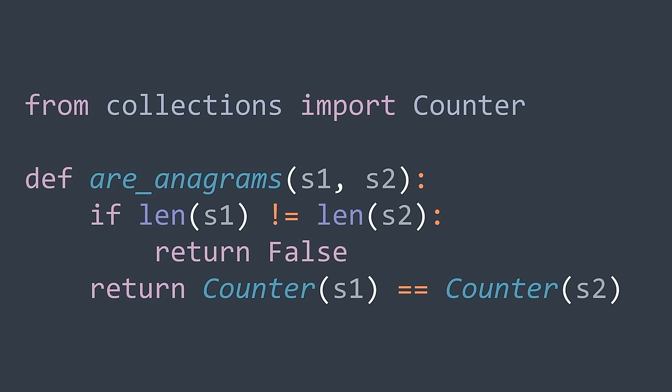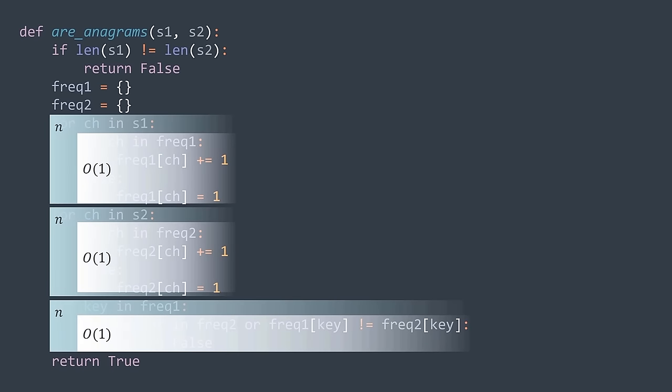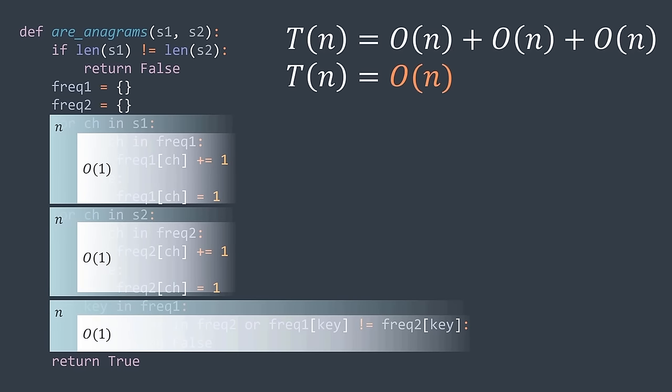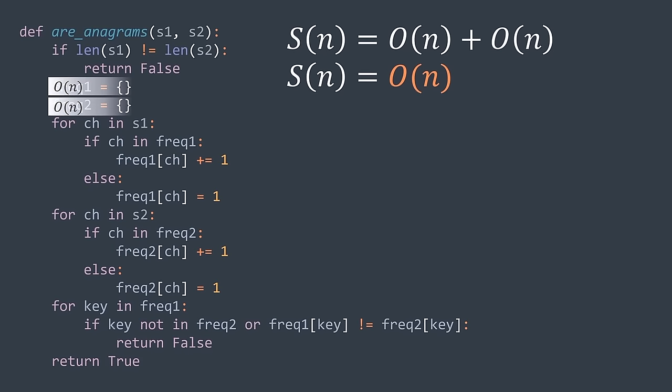For the time complexity, in the worst case s1 and s2 have the same length — let's name it n. We traverse n characters at most three times, and search and insert in a hash table costs O(1) on average. So O(n) + O(n) + O(n) gives an O(n) time complexity. For the space complexity, we have O(n) for each table because they can contain up to n keys each — we get O(n) space complexity.